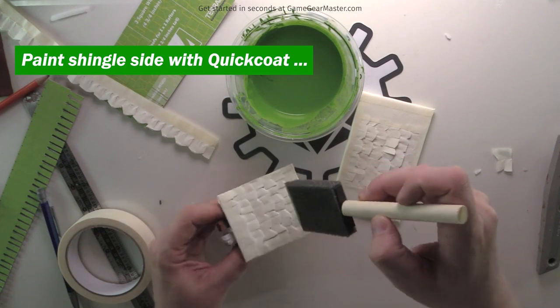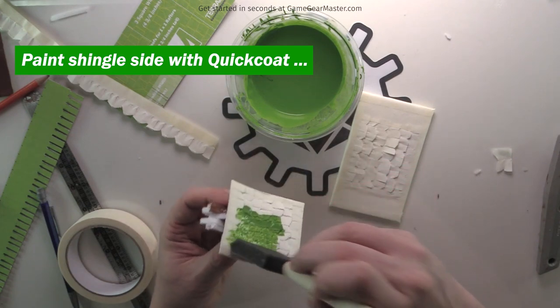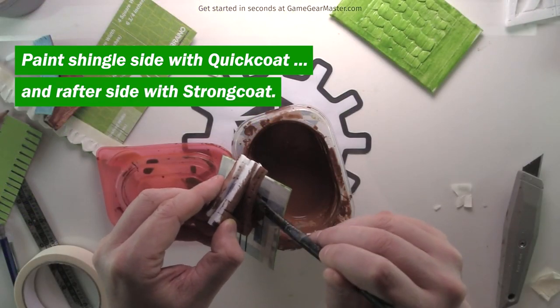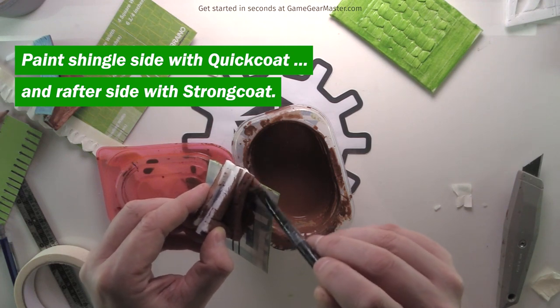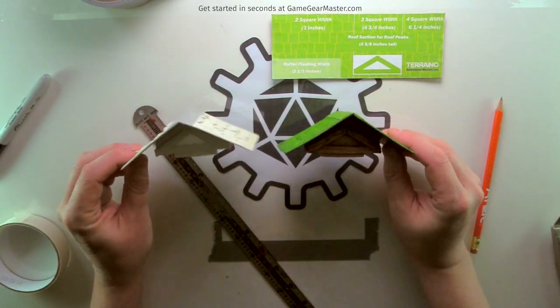Now the procedure to paint these is exactly the same as it is for the roof rafters. And then it should be ready to go. It kind of turns out like this.